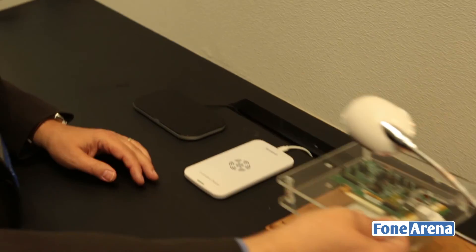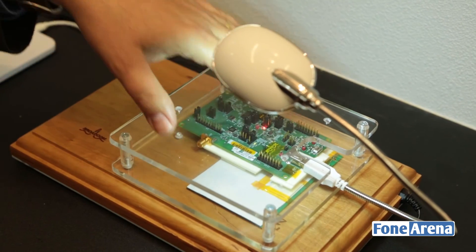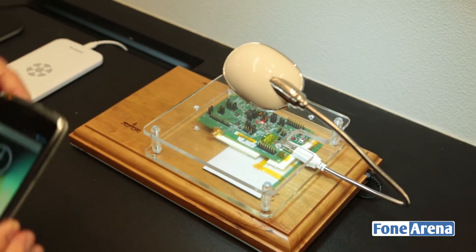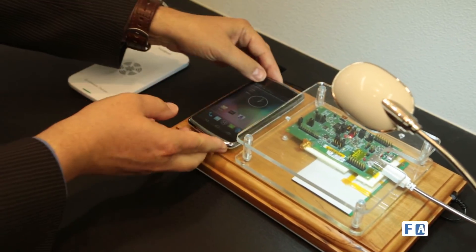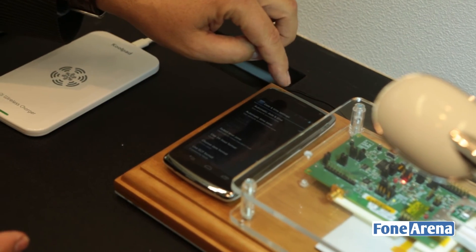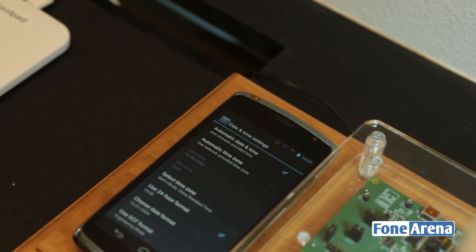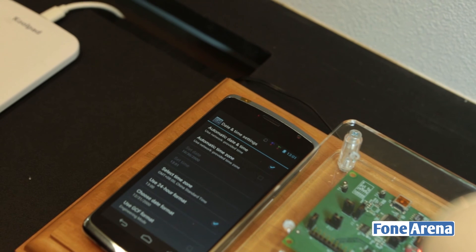So that completes more or less the demonstration. Here you see that we have this device charging on this charging pad. And now I'm going to place this phone to show that we can actually charge multiple devices. So you see the LED come on here indicating that we have this device and this device now charging from the A4WP standard charger.